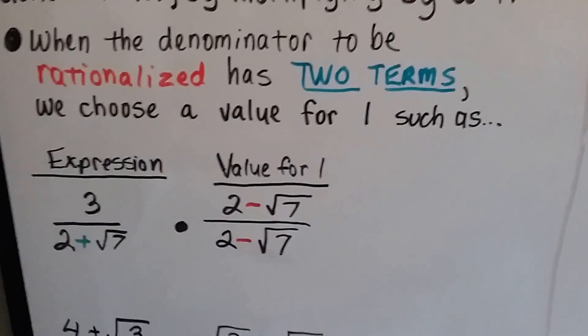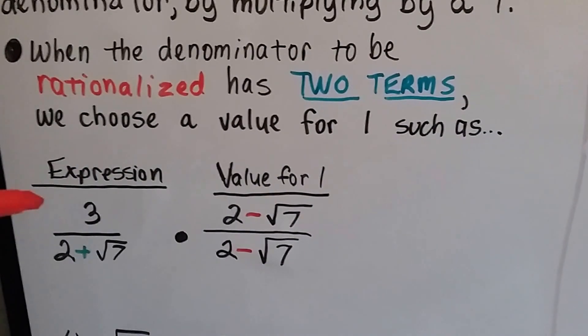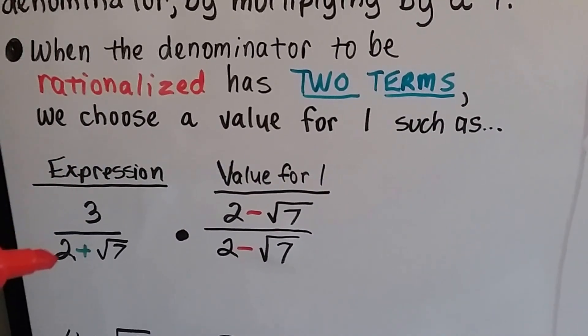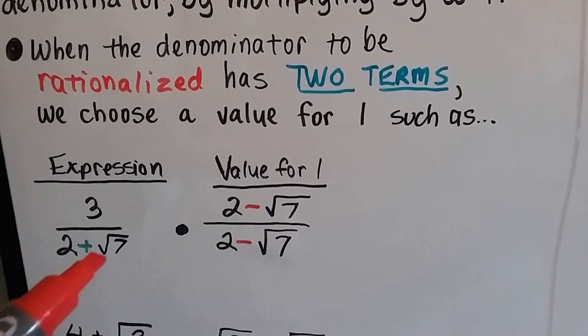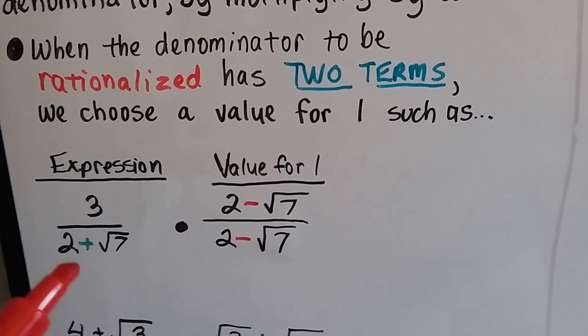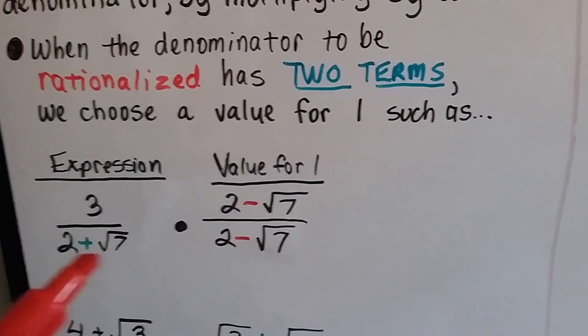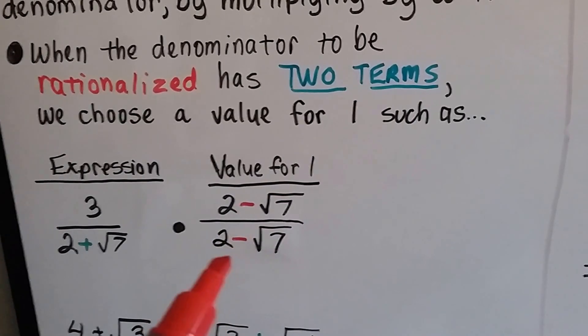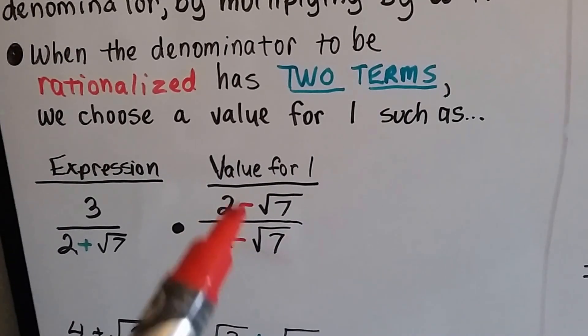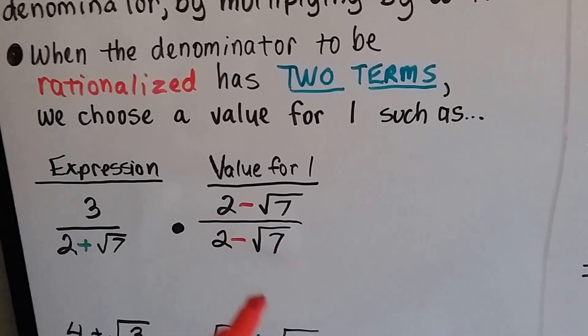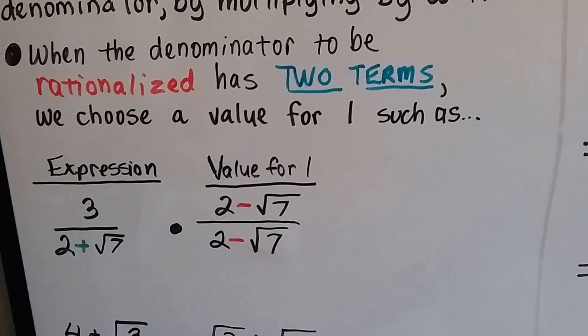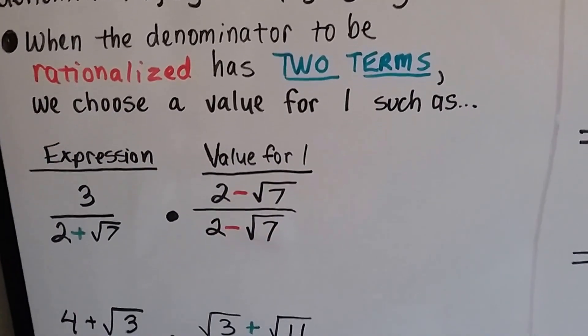So here we've got this expression. We've got the quotient of 3 and 2 plus the square root of 7. What we can do is take this 2 plus square root of 7, put a subtraction sign here, and multiply the numerator and denominator by this as our value for 1. It's got the same numerator and denominator, so it's a 1.